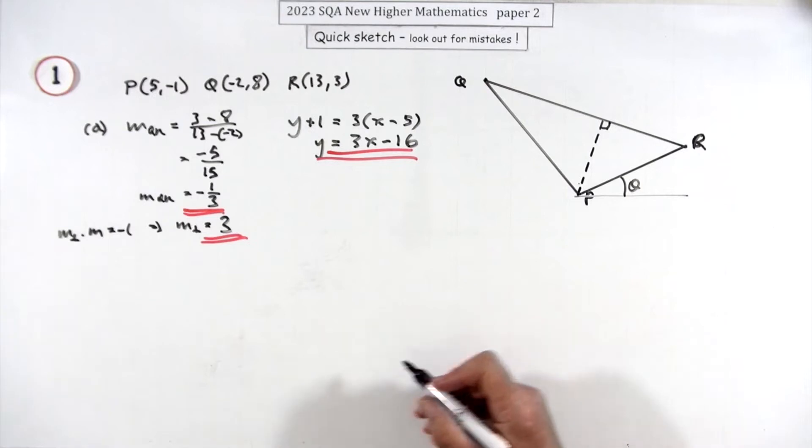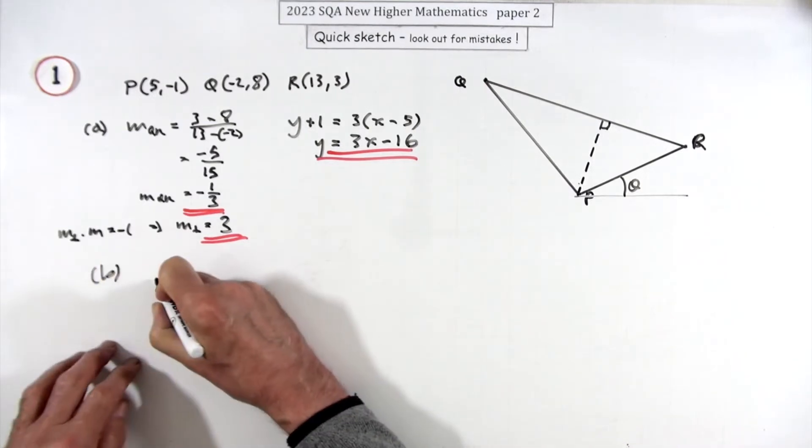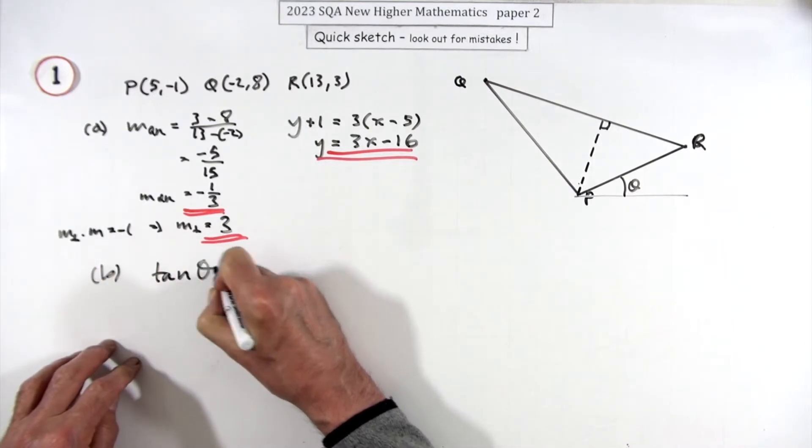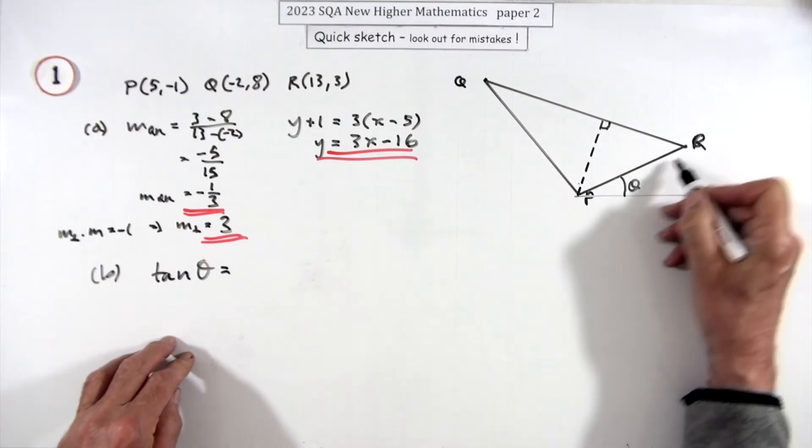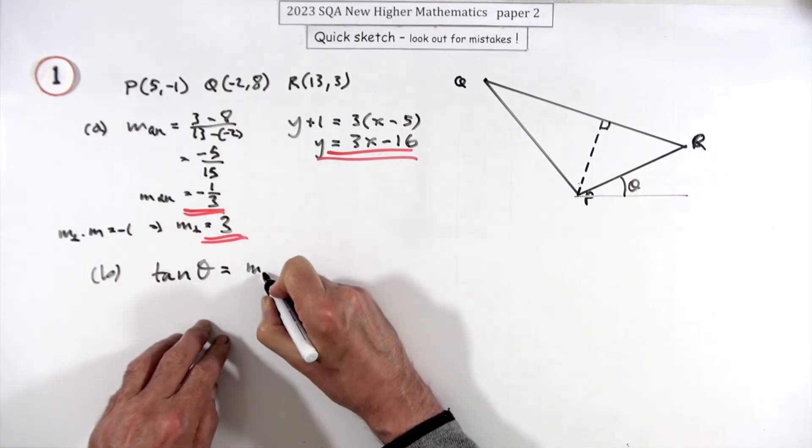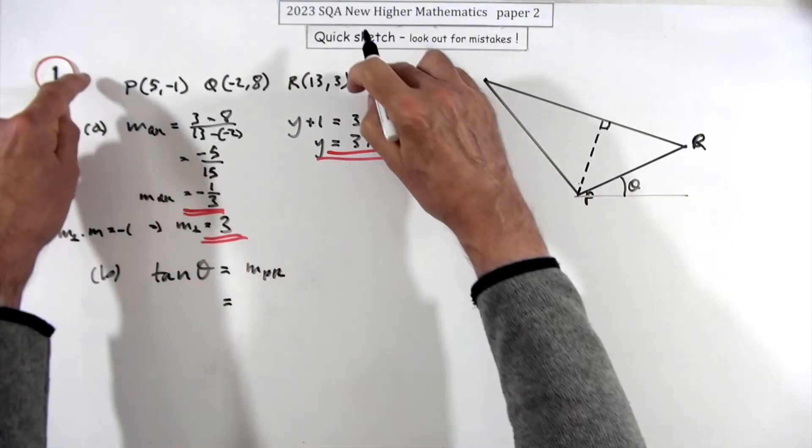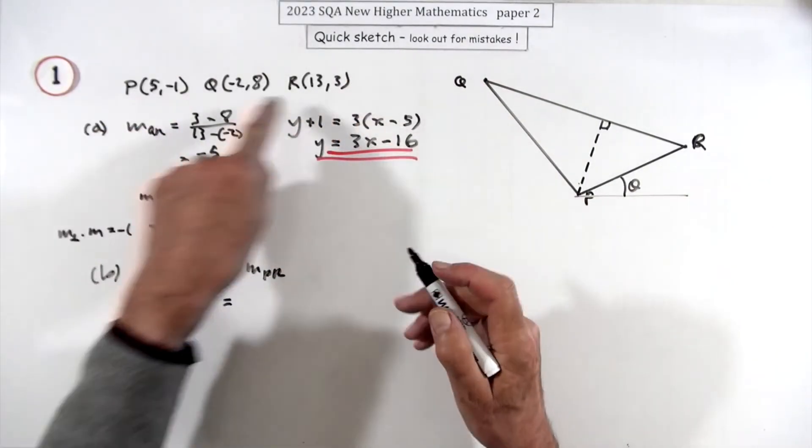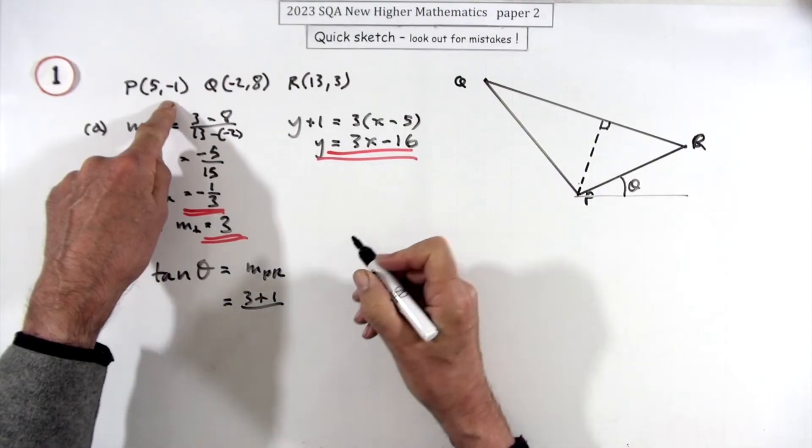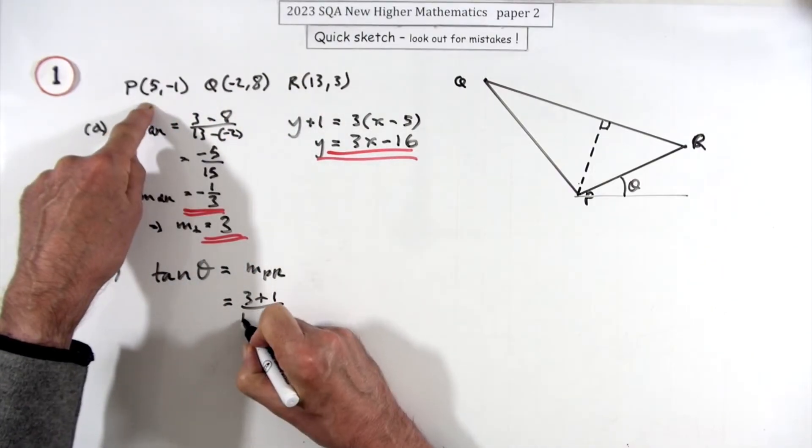So in part b you know that the tangent of that angle will be the gradient of PR. So it's PR, so it's these two. So it'll be the 3 plus the 1 over 13 take away the 5.